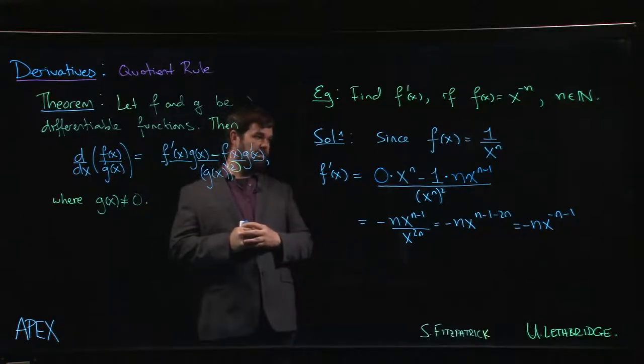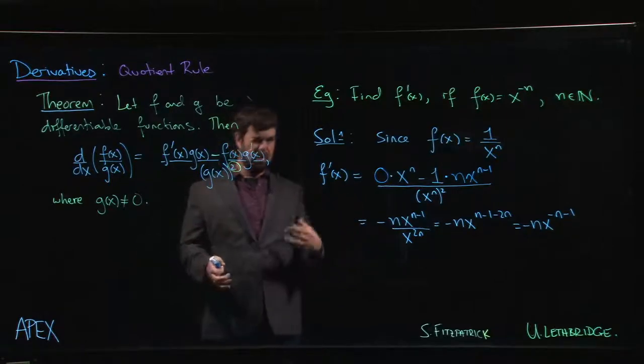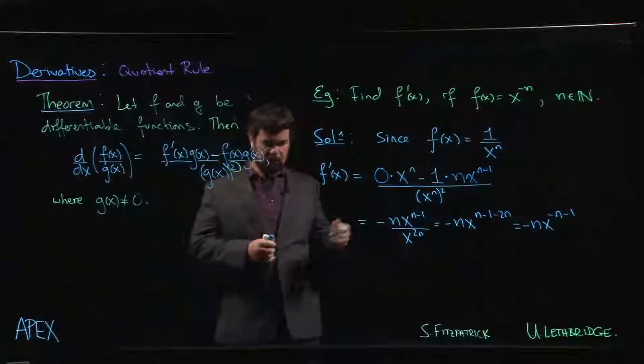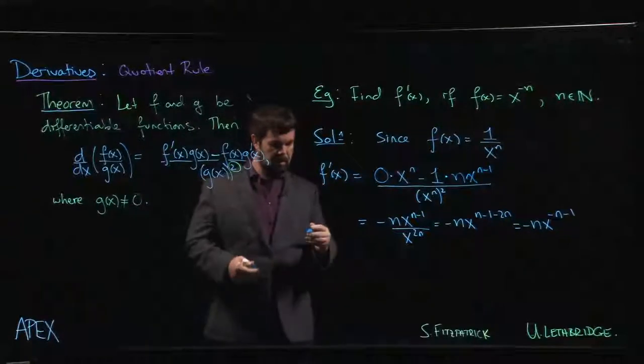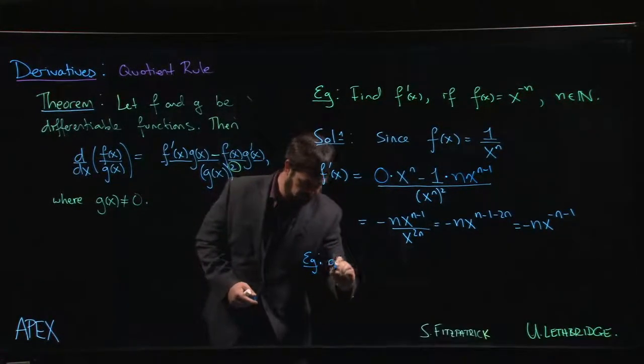So what this tells us is that now the power rule in fact works for all integers, positive and negative. And zero, I guess x to the zero, we treat that as the constant function one, it works in that case too.